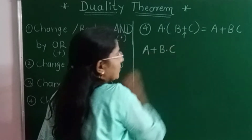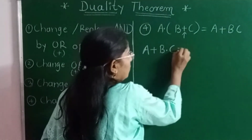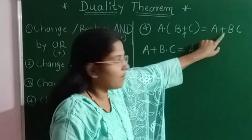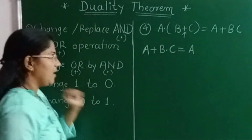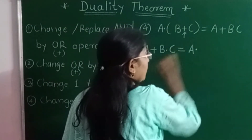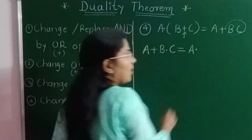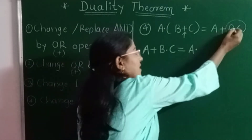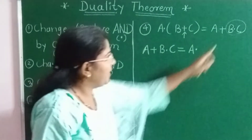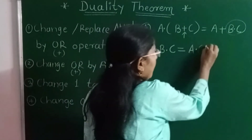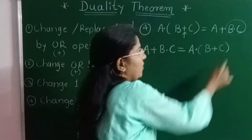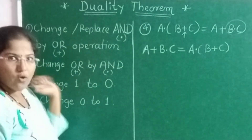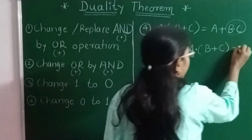So in the bracket it becomes B · C. Equal to — write A as it is. The next operator after A is plus, so replace that plus by dot. Now the next term is the product term BC — that is B · C — where nothing is written, so again consider dot. I change it to B + C. So the dual of A · (B + C) = A + BC is A + (B · C) = A · (B + C), which simplifies to A + BC = A(B + C). This is the dual of the given expression.